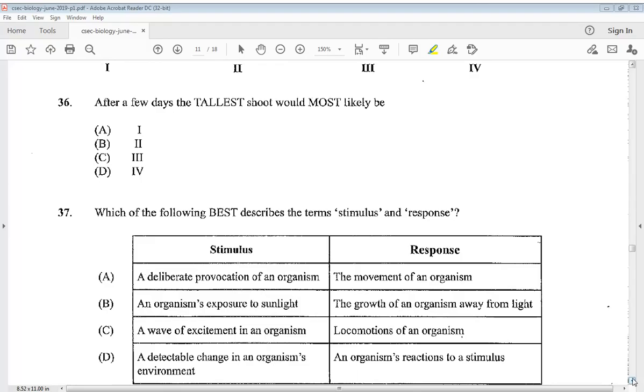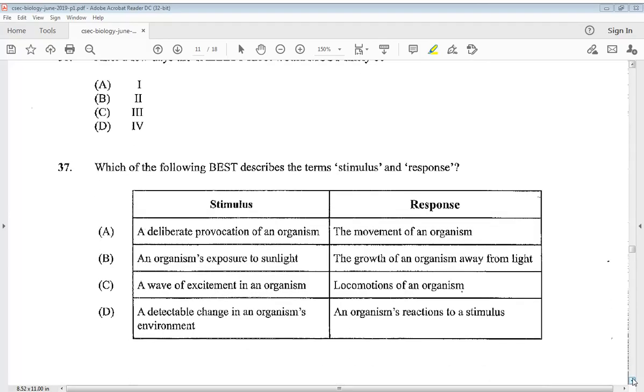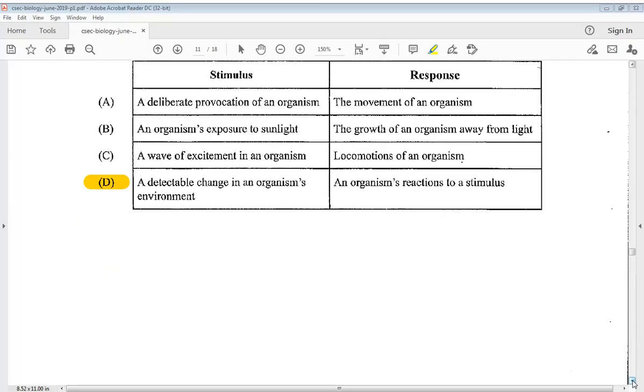Question 37 says which of the following best describes the term stimulus and the response. So we know D: a detectable change in an organism's environment and the response, an organism's reactions to a stimulus. Let's go to 38.